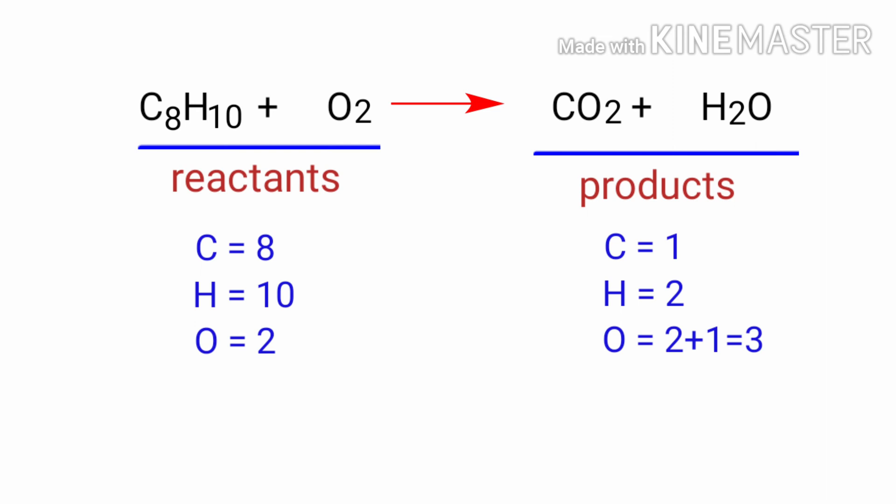On the reactants side, there are 8 carbon atoms, 10 hydrogen atoms and 2 oxygen atoms. On the products side, there are 1 carbon atom, 2 hydrogen atoms and 3 oxygen atoms.